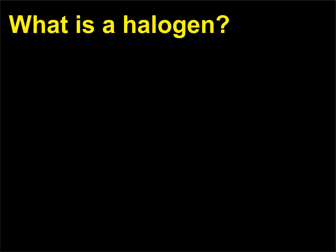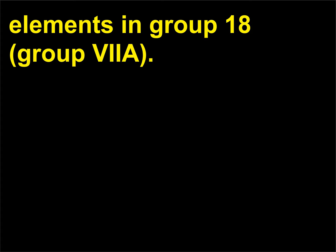What is a halogen? Elements in group 17, group VIIA.